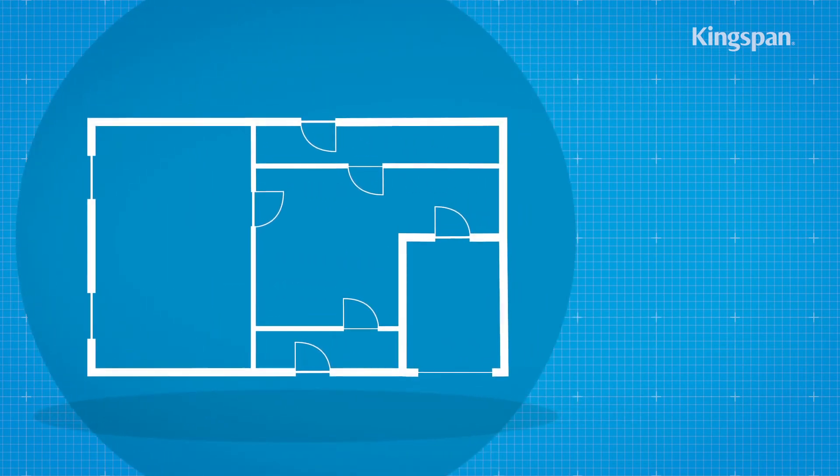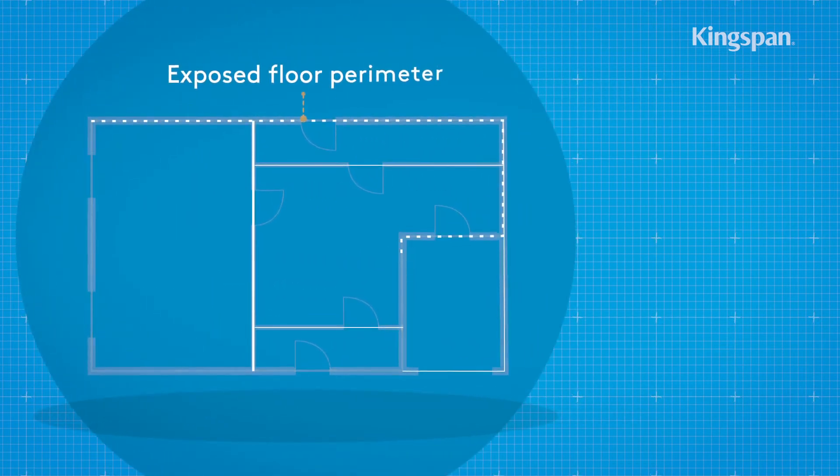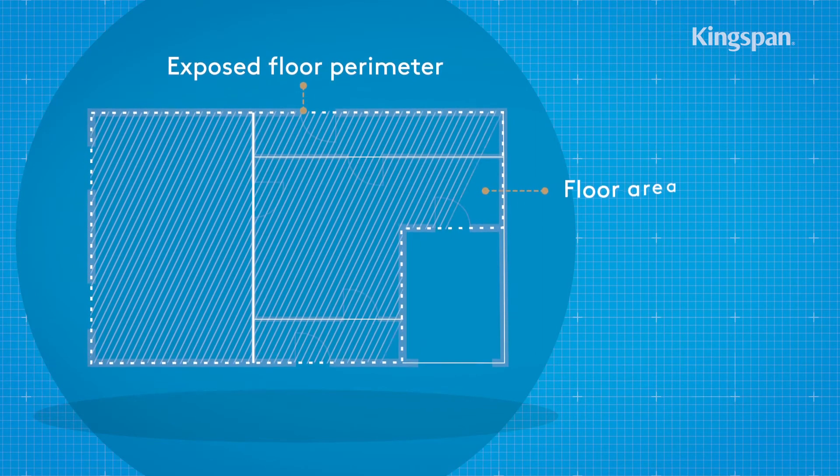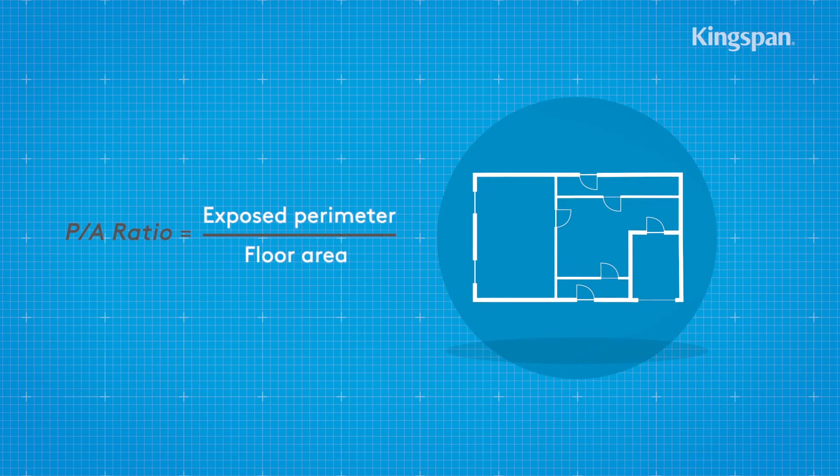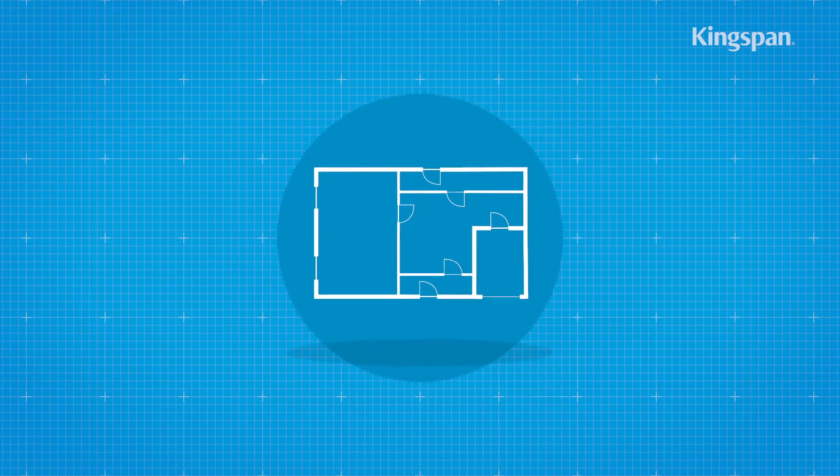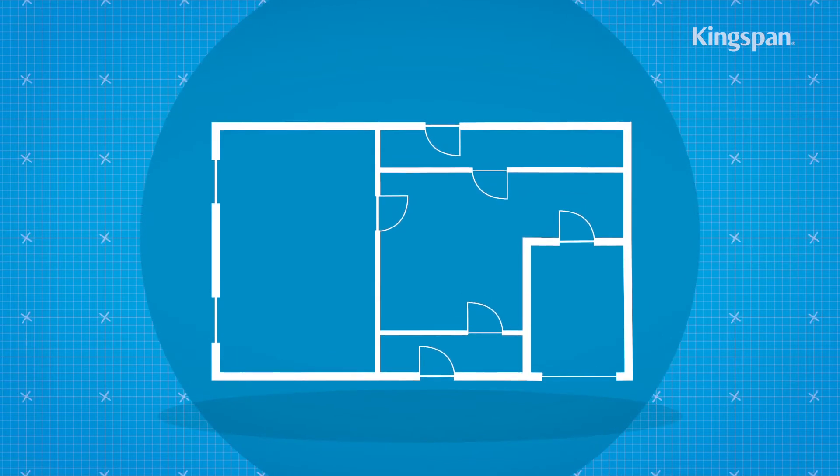Measure and determine the exposed floor perimeter and floor area. Once you have both figures, divide the perimeter by the floor area to get your ratio.